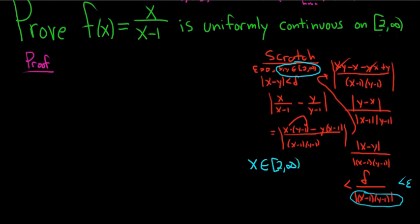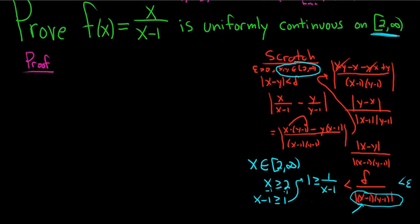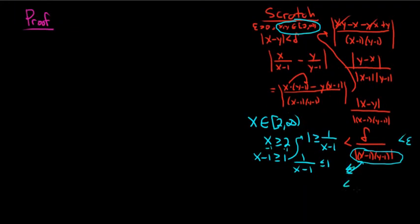The problem told us that x and y are in the set 2 to infinity, which is probably important. That means x is greater than or equal to 2. So if I subtract 1 from both sides, x minus 1 is greater than or equal to 1. Then dividing both sides by x minus 1, we get 1 greater than or equal to 1 over x minus 1, meaning 1 over x minus 1 is less than or equal to 1. So this whole expression is less than or equal to delta over 1 times 1, and if we make delta equal to epsilon, we've got it.